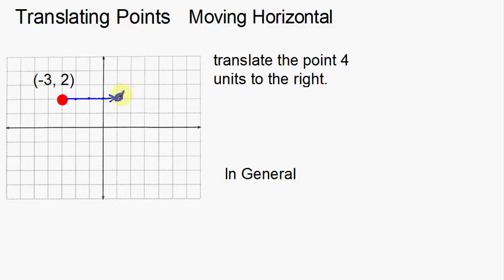So now my point is right here. What are the coordinates of this new point? Those coordinates are one, two. Notice how the coordinates changed — we went from negative three, two and now we have a new coordinate of one, two. The x coordinate changed, but notice the y coordinate — the two didn't change. The y coordinate didn't change.